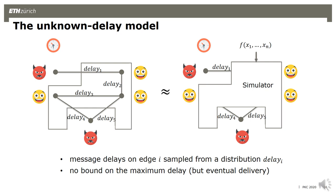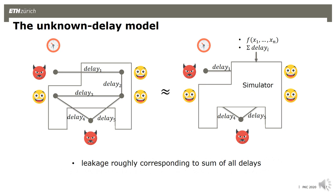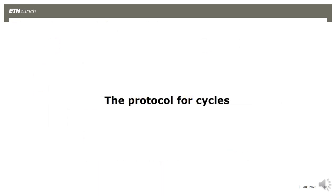A nice feature of asynchronous protocols is that they run as fast as the actual network, and we would like to keep this in our model. This means the protocol running time depends on the delays, so we need to leak something to the simulator to simulate the running time of the protocol. This corresponds roughly to the sum of the delays in the network — we don't leak the actual graph, but the sum of the delays.